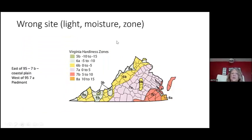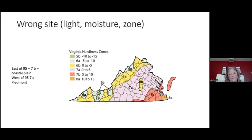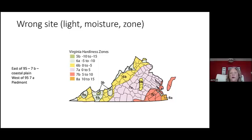A lot of times we see people planting things in the wrong zone — they see something tropical and want to leave it out all winter, and that just doesn't work. Prince William County is divided into two zones: 7A and 7B. The coastal zone is 7B, roughly east of I-95, and west of I-95 is considered the Piedmont at 7A. Keep in mind things are changing — as things get warmer or we get more rainfall, zones can shift. Monitor the news on weather conditions in your zone.